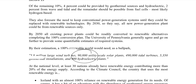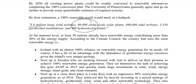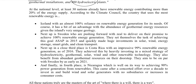At the national level, around 30 nations have achieved more than 20 percent of their electricity supply from renewable resources. The country utilizing the most renewable energy is Iceland, which uses 100 percent renewables thanks to its abundant geothermal energy. Next is Sweden, which is pushing itself toward 100 percent renewable and investing in renewable resources. The third place is Costa Rica, which achieved an impressive 99 percent renewable energy in 2016.